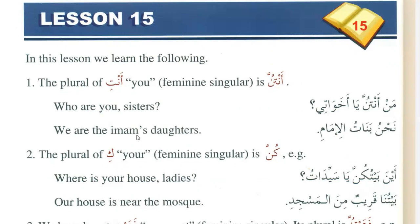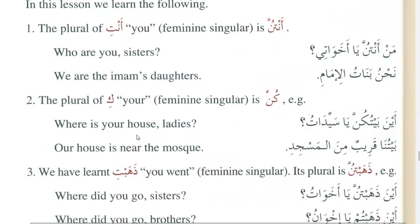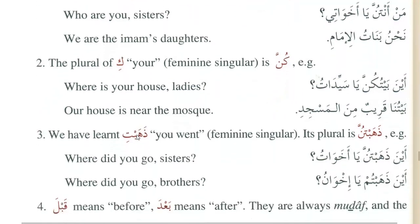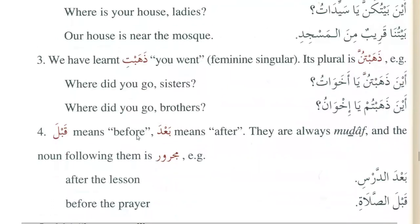The plural of 'ki' (your, feminine singular) is 'kunna'. Example: 'Aina baitu kunna ya sayyidatu?' — Where is your house, ladies? Answer: 'Baituna qaribun minal masjidi' — Our house is near the mosque.